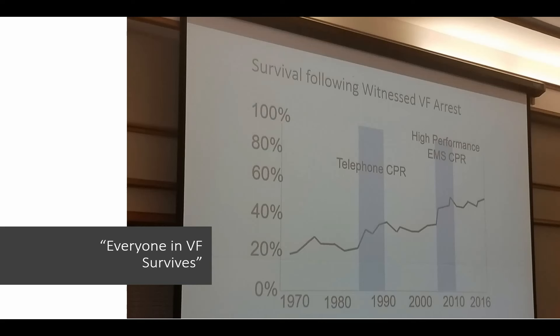Fast forward to 2016, Seattle has a survival rate of nearly 60% — they tripled their survival rate from witnessed VF arrest. We just began the tracking process, and hopefully since they have already told us how to do this, we can do it a little bit quicker by learning from their mistakes and trials. Pay attention to the blue shaded areas on this graph — there's a pretty dramatic increase in survival during two periods. The first was when they implemented telephone CPR, and around 2010 there's another increase when they implemented high performance CPR, which is what we're talking about today.